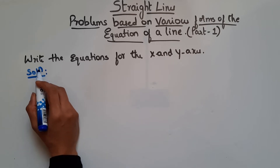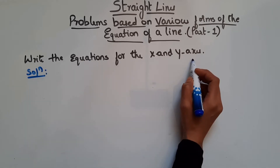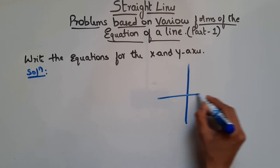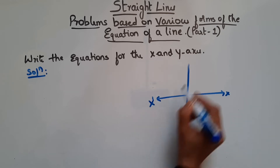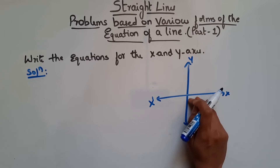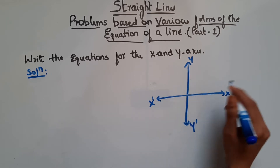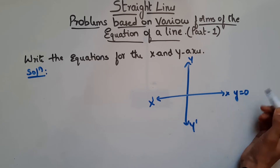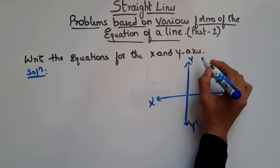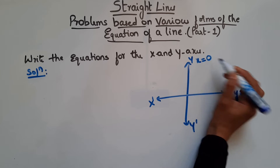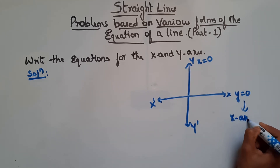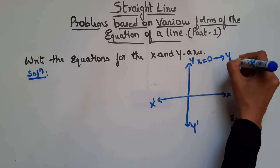So let's see this problem. Here it says, write the equations for x and y-axis. So this is your x-axis and this is your y-axis. The equation for x-axis is y = 0, because on the x-axis, y is 0. And on the y-axis, x is 0, so the equation for y-axis is x = 0.